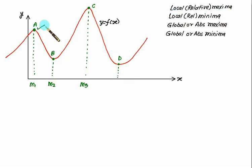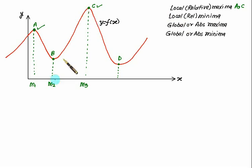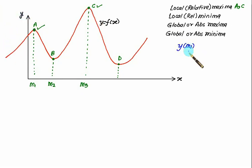As far as local maxima is concerned, points a and c are the local maxima — that is, x = m1 and x = m3. So a and c are called local or relative maxima, with corresponding x-values m1 and m3. If we find the values at m1 and m3 and locate them on the graph,